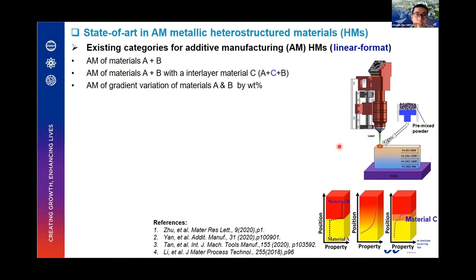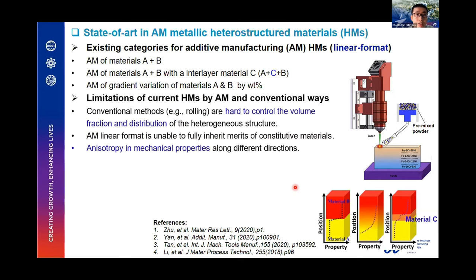The current state-of-the-art in additive manufacturing of metallic heterogeneous structural materials includes: AM of material B directly on material A; AM of material A on material B with an interlayer material C to enhance interlayer bonding; and AM with variation of material composition by weight percentage. However, conventional methods such as rolling are hard to control the volume fraction and distribution of heterogeneous structures. For current AM in linear format, AM is unable to fully inherit the merits of the constituent materials.